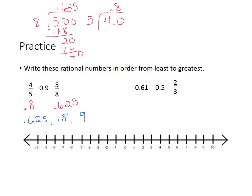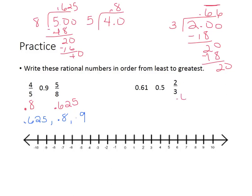Our next example is 61 hundredths, 5 tenths, and 2 thirds. It's easier to change them all to decimals. So 2 divided by 3: 3 goes into 20 six times (18), subtract and bring down — we're going to get a repeating decimal, so we write 66 hundredths repeating. Now we have them all in decimal form. Which is worth the least? Hopefully you said 5 tenths, then 61 hundredths, then 66 hundredths repeating. Please make sure you write all of these down, and we will go over it in class again. If you have any questions, make note of them so you can ask for help.